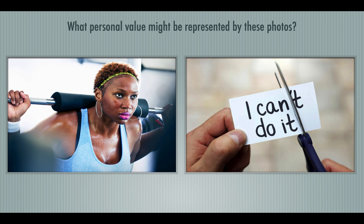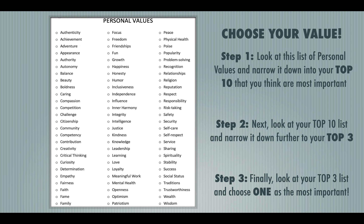Let's try our last photo. Erase your whiteboard and we'll try this one. I thought this is kind of a confusing photo because the words say 'I can't do it,' but then that's being cut in half. So something potentially like success, or determination might be one that many people thought of. Hopefully this is making sense to you — how a picture can represent a value in a lot of different ways, and one photo can have a lot of different meanings.